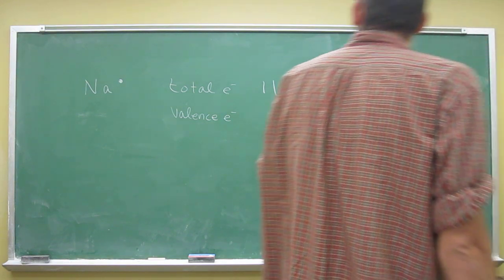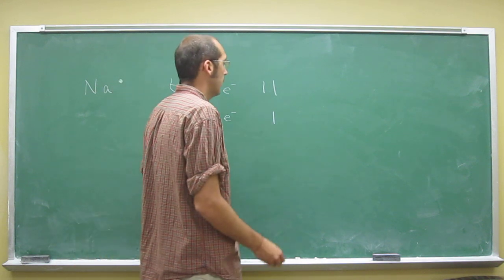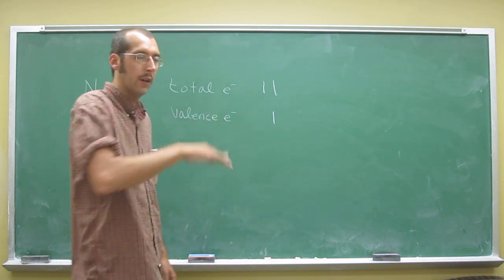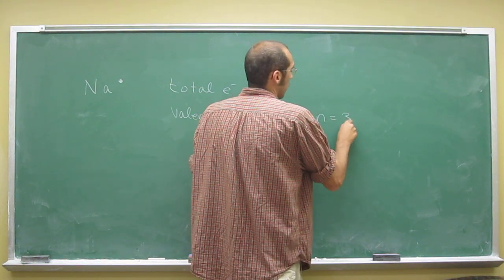And the energy level for the valence electrons is, well, it's the period that it's on. So the energy level here is 3.